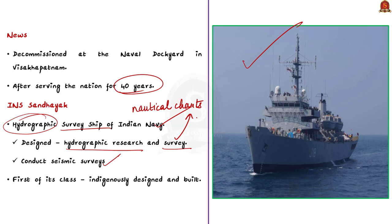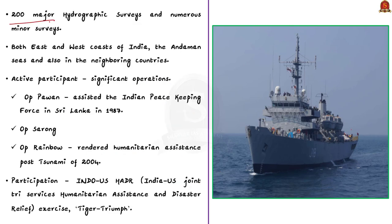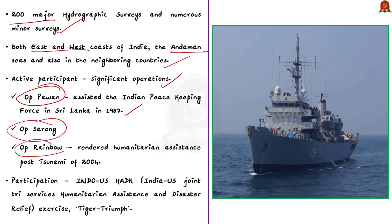INS Sandhyak is the first of its class to be indigenously designed and built by India. It has undertaken approximately 200 major hydrographic surveys and numerous minor surveys, covering both the east and west coasts of India, the Andaman Seas, and neighboring countries. The ship played a huge role in Operation Pavan, assisting the India Peacekeeping Force in Sri Lanka in 1987, and also in Operation Sarang and Operation Rainbow. It rendered humanitarian assistance during the tsunami of 2004 and participated in the India-US Joint Tri-Services Humanitarian Assistance and Disaster Relief Exercise, as well as the Tiger Triumph Exercise.